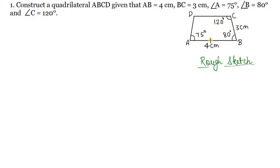The three angles are given and the two included sides are also given. So you have 5 elements — you know a quadrilateral — therefore you can draw a unique quadrilateral.